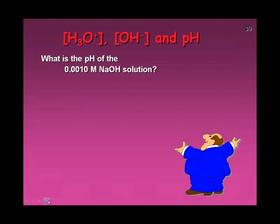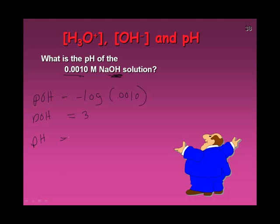Let's find the pH of a 0.0010 molar NaOH solution. This is a base producing OH−, so I find pOH first — not pH directly. The pOH is the negative log of 0.0010, which gives pOH equals 3. Then pH equals 14 minus pOH, so 14 minus 3 equals 11. That's how you handle a base problem.